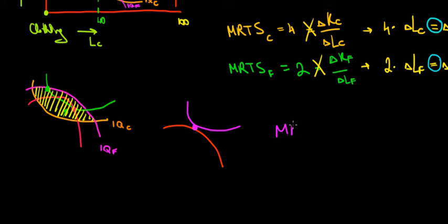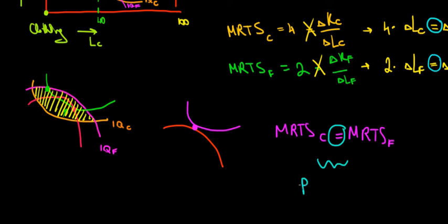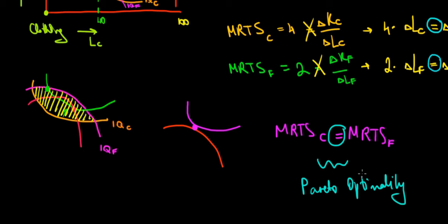So the MRTS of the clothing company will equal the MRTS of the food company at that specific point. This equation tells us that we are reaching Pareto optimality — literally exhausting all room for improvement. Keep in mind: same analogy, same logic as with consumer behavior. In the next video, we are going to see how this concept applies to the production possibility frontier.